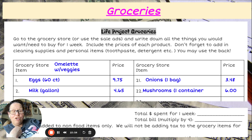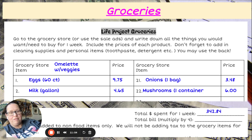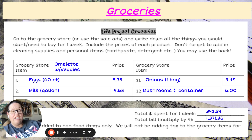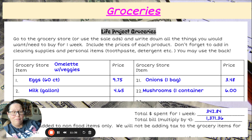I came up with a total of $342.84 for one week of groceries for my family. Because it's only one week, we multiply it by four, which gives us $1,371.36 for the month. Normally you'd have sales tax to consider, but in the state of California, food items are not taxed. Non-food items like toothpaste and detergent are taxed, but for this assignment, we're not going to worry about that.